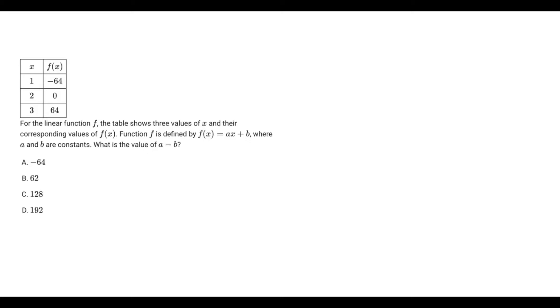Alright, so they give us three values of x, and what we can do is actually make the function. Let's write it out so we have f(x). Now we have to find out what the slope is, that's what the a represents because it's right in front of x.